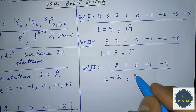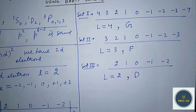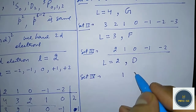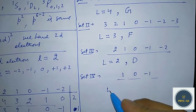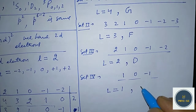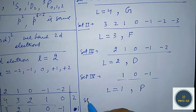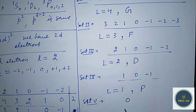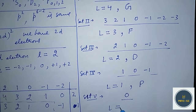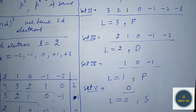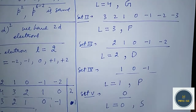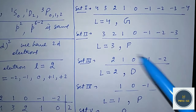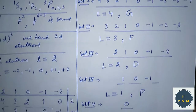So we have these five sets of ML values, and these give us five values of L: L = 0, 1, 2, 3, and 4. We now have these capital L values.